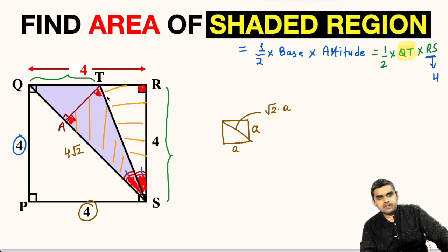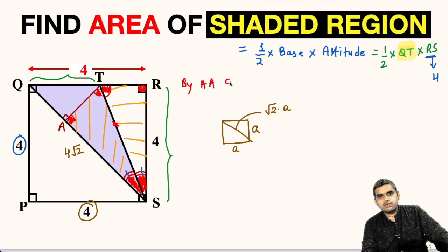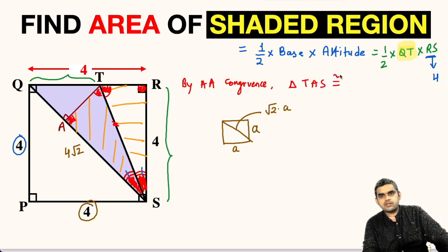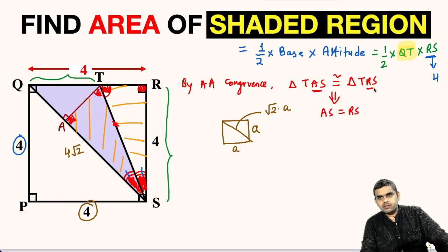The third angle in both triangles will also be equal, and TS is a common side between the two triangles. Therefore, by Angle-Angle congruence, triangle TAS is congruent to triangle TRS. By CPCT, AS equals RS.